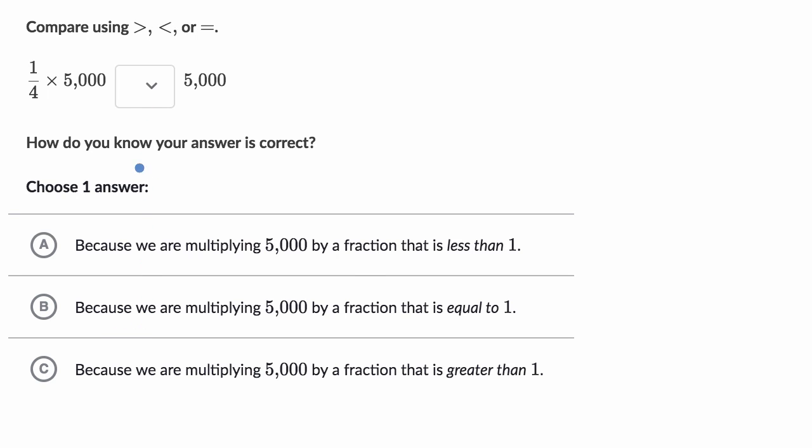This right over here is an image from an exercise on Khan Academy, and it says, compare using greater than, less than, or equal to. And on the left, we have one-fourth times 5,000, and we wanna compare that to 5,000. On Khan Academy, you would click on this dropdown, and you would pick greater than, less than, or equal to.